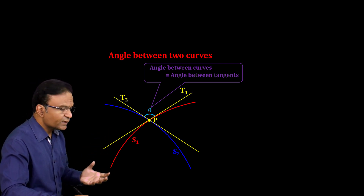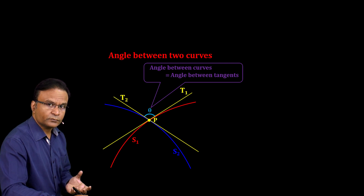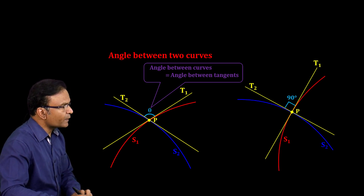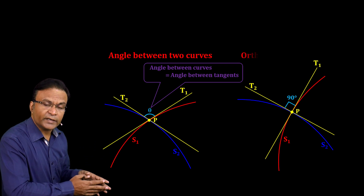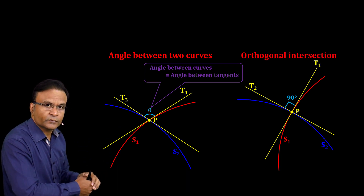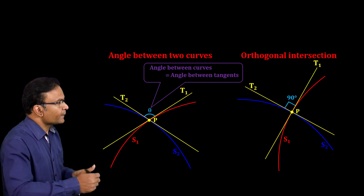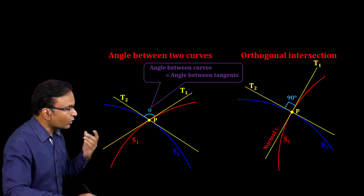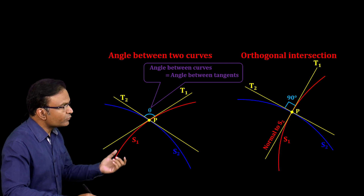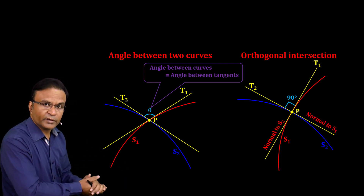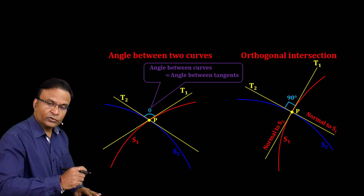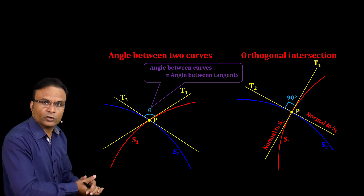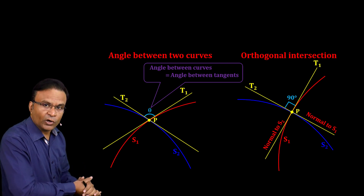Now suppose this angle theta is 90°. When the angle of intersection is 90°, we say curves S1 and S2 are intersecting orthogonally. At this time, the tangent to curve S1 which is T1 is actually the normal to curve S2, and the tangent to curve S2 which is T2 is the normal to curve S1. One curve's tangent becomes the other curve's normal when two circles intersect orthogonally.